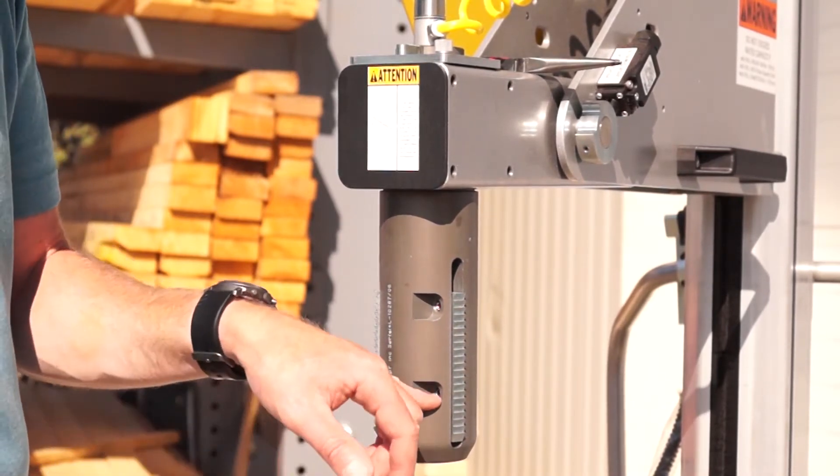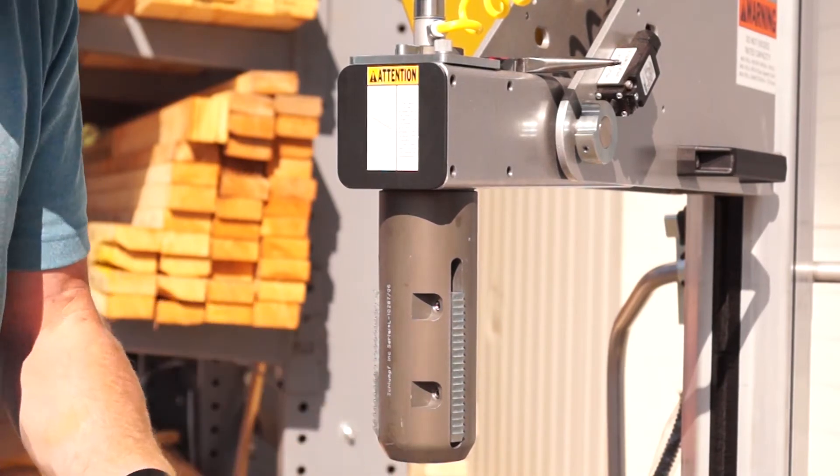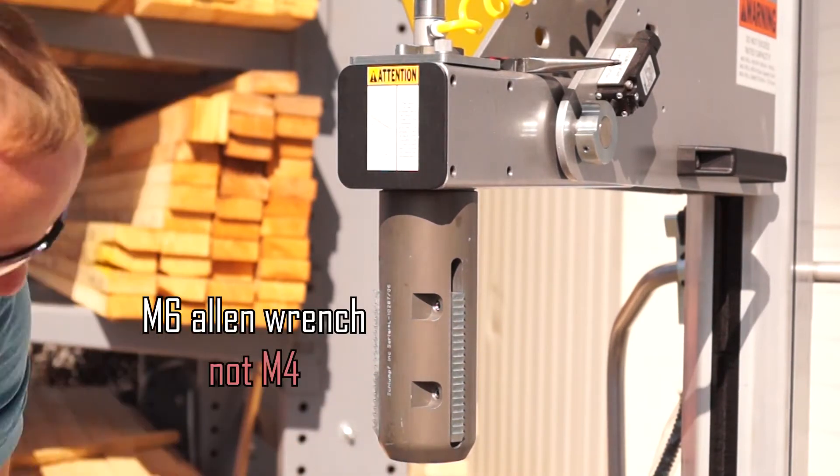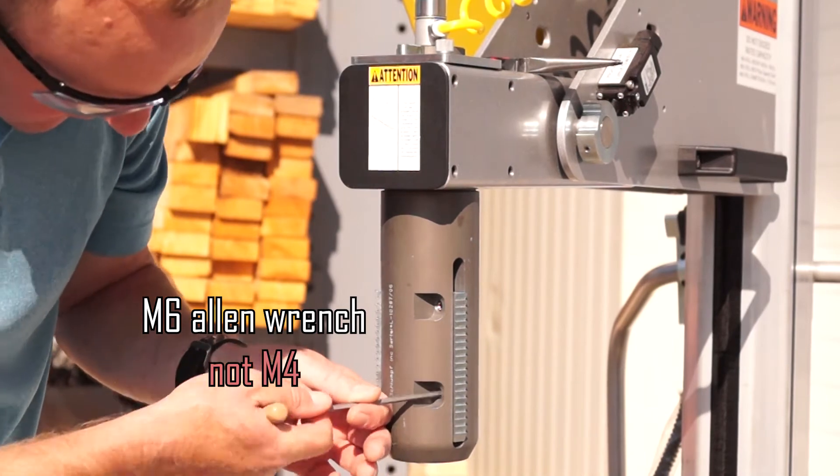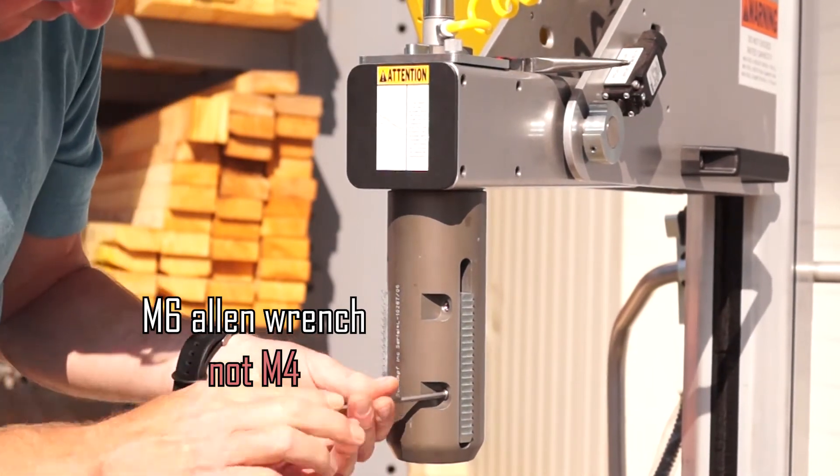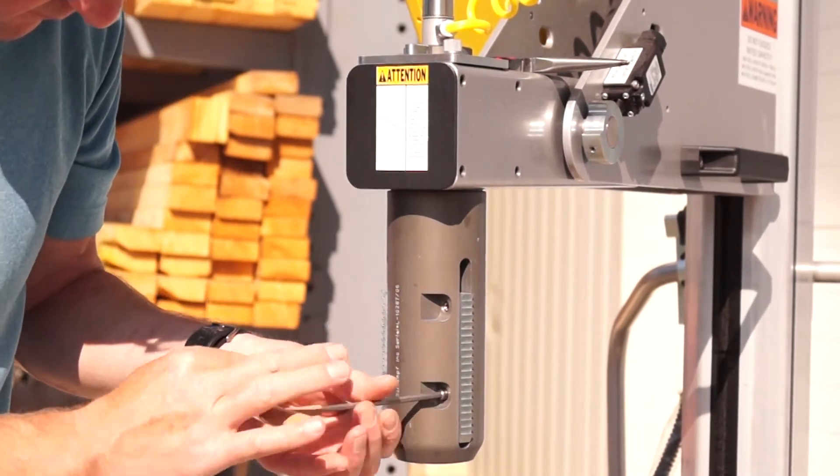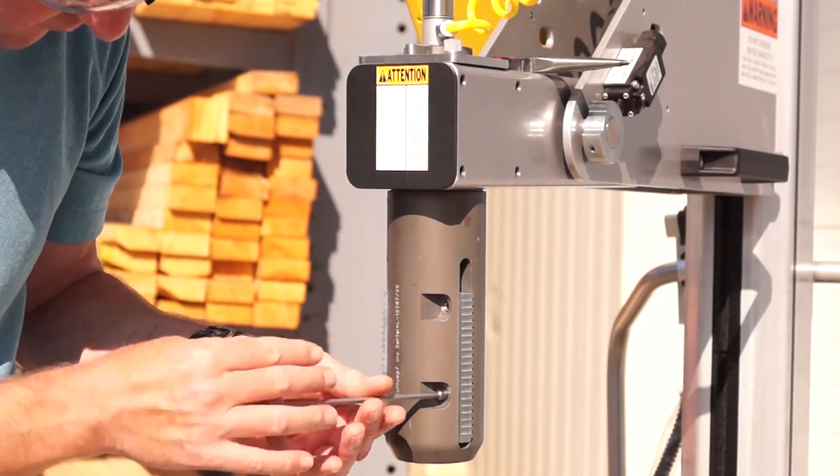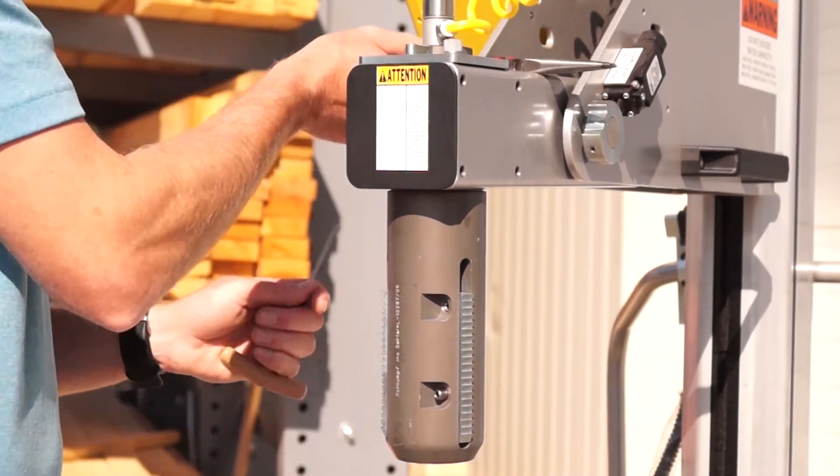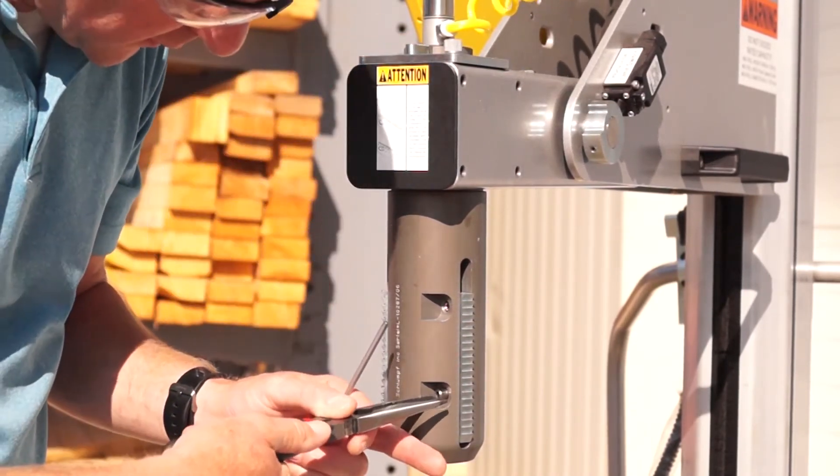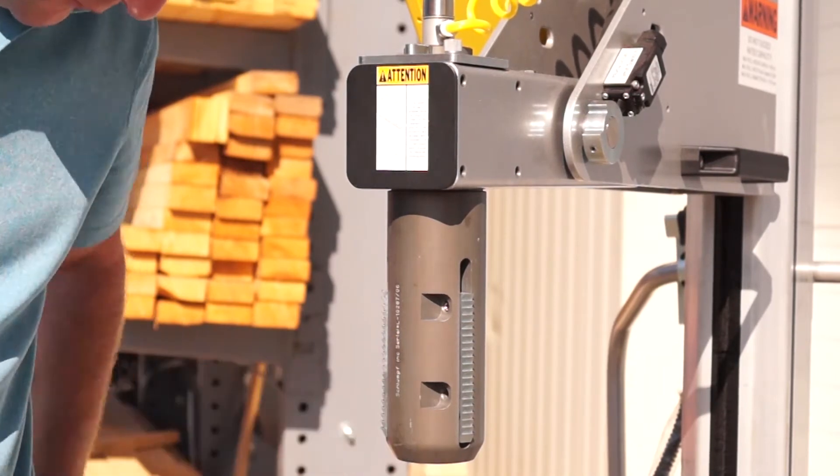The first thing you need to do is remove the lower gripper pin, so I just use a M4 Allen. Need those pliers to get the pin out. Don't lose that.